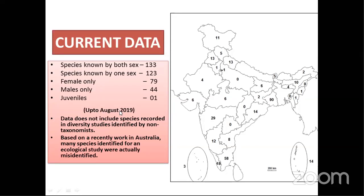This data is up to August 2019 and does not include species recorded in diversity studies identified by non-taxonomists, because there are a lot of misidentification problems. A recent ecological study from Australia showed that specimens identified by ecologists and deposited in museums were found to be mostly misidentified when checked by taxonomists. So most species records from diversity studies have not been included in this analysis.